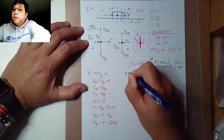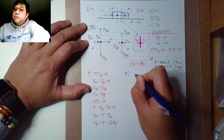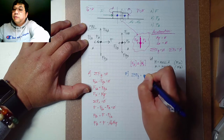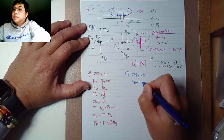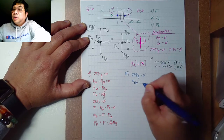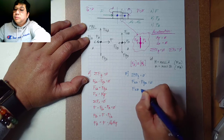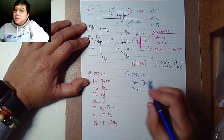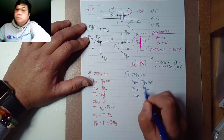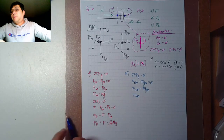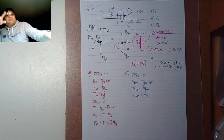Now analyzing block B: the summation of forces along the Y axis equals zero. Anything upward is positive, downward is negative: F-N-B minus fg-B equals zero. So the normal force on block B equals the weight of block B: F-N-B = mg.